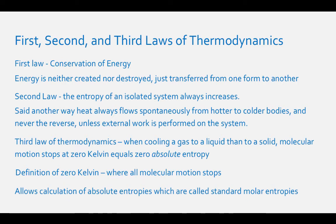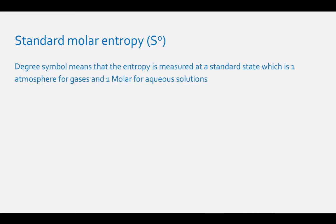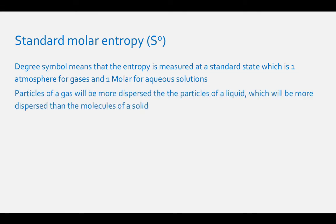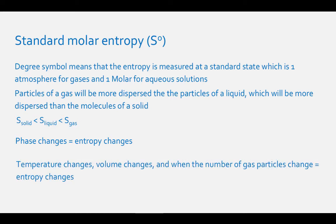The third law also lets us calculate absolute entropies for a substance, and we define these as standard molar entropies. The symbol for standard molar entropy is S°. S is used to represent entropy, and the degree symbol means entropy is measured at standard state — one atmosphere for gases and one molar for aqueous solutions. The particles of a gas will be more dispersed than the particles of a liquid, which will be more dispersed than the molecules of a solid, corresponding to: S°(solid) < S°(liquid) < S°(gas). This means that when a substance undergoes a phase change, its entropy also changes. Entropy also changes with temperature changes, volume changes, and when the number of gas particles change.